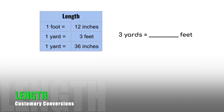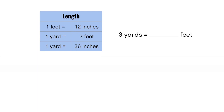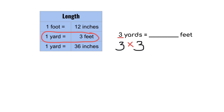Let's work on our first conversion. Here we have three yards, and we want to know how many feet that is equal to. So we will start with three and multiply, because we are going from larger units to smaller units. We look in the conversion chart and find the conversion that has yards and feet together, which is one yard equals three feet. So three times three is equal to nine. Three yards is equal to nine feet.